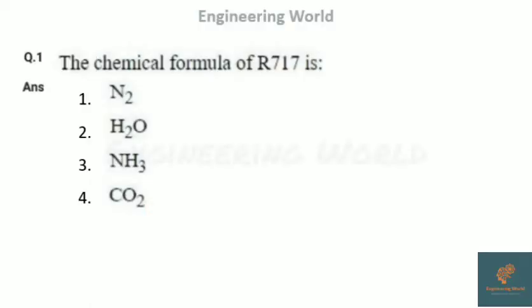The first question: what is the chemical formula of R717? Options are N2, H2O, NH3, CO2.